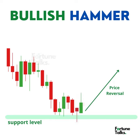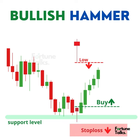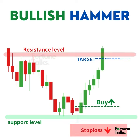This could signal a potential price reversal to the upside. Take a long entry when price breaks above the high of the hammer, and place the stop loss either below the hammer low or below the support level. The nearest resistance level can be set as the target price.